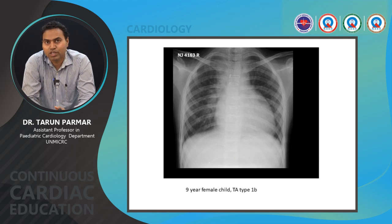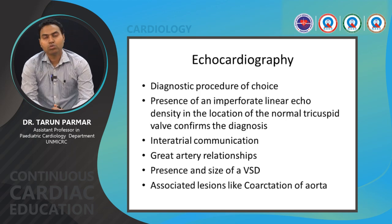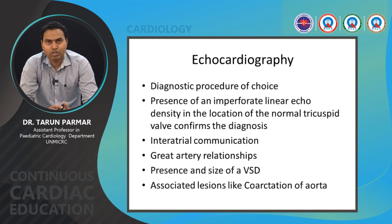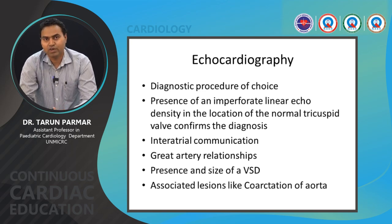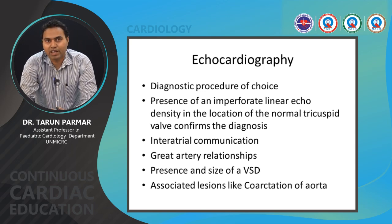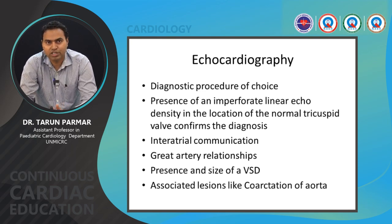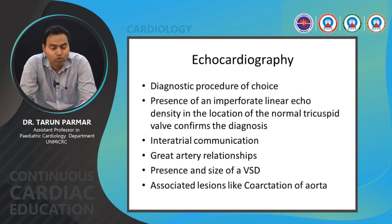Echocardiography is the diagnostic procedure of choice. The post-surgical X-ray also shows sternal wires and decreased pulmonary blood flow. On echocardiography, there is clearly no tricuspid valve — it is formed by a fibrous or muscular band with no communication between the RA and RV. There is obligatory right-to-left flow at the interatrial communication. Great artery relationship (NRGA or TGA) must be assessed, and the presence and size of the VSD noted carefully, along with any associated anomalies such as coarctation in TGA physiology.